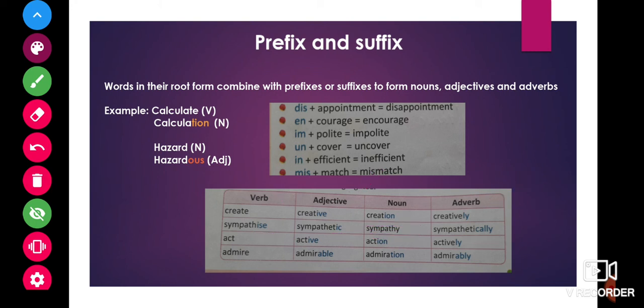In the same way, act is the root form of the word. When we add the suffix i-v-e, active, it becomes an adjective. When we add the suffix i-o-n, action becomes a noun. When we add the suffix l-y, actively becomes an adverb.